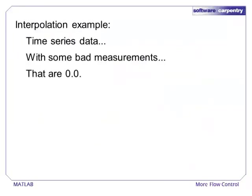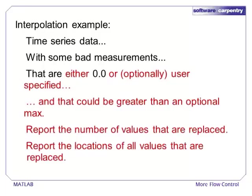Let's return to the interpolate function that we introduced in part one of the flow control lectures. In that episode, we defined a function that would accept time series data that contained bad measurements. All of the bad measurements were assumed to be zero, and our function filled in those zeros by interpolating from nearby values. In this episode, we will make our function more useful by adding extra parameters and return types.